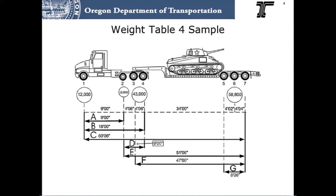The second example shows Weight Table 4 weights, which is allowed because the combination is hauling a single, non-divisible load. All group axle spacings and weights conform to Weight Table 4.